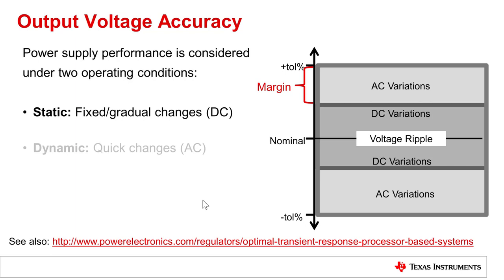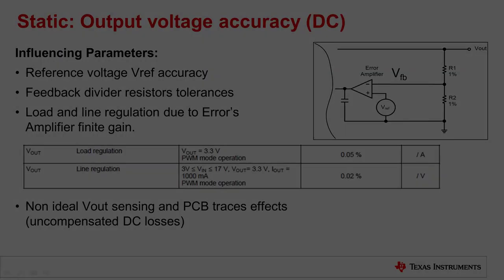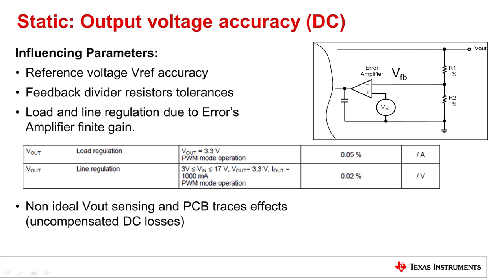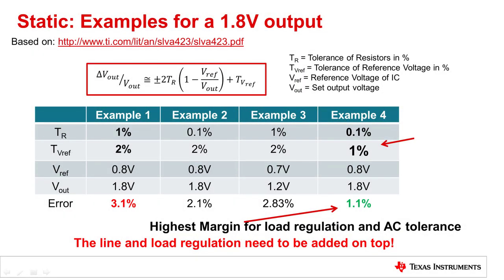Let's dig into the factors contributing to static tolerances. An SMPS is a closed-loop regulated system. In terms of DC error, the influencing parameters are: the reference voltage (VREF) accuracy, the feedback divider resistor tolerances, the load and line regulation due to the error amplifier's finite gain — expressed as a percentage of output current and input voltage respectively — and the non-ideal Vout sensing due to PCB trace effects, also called uncompensated DC losses.